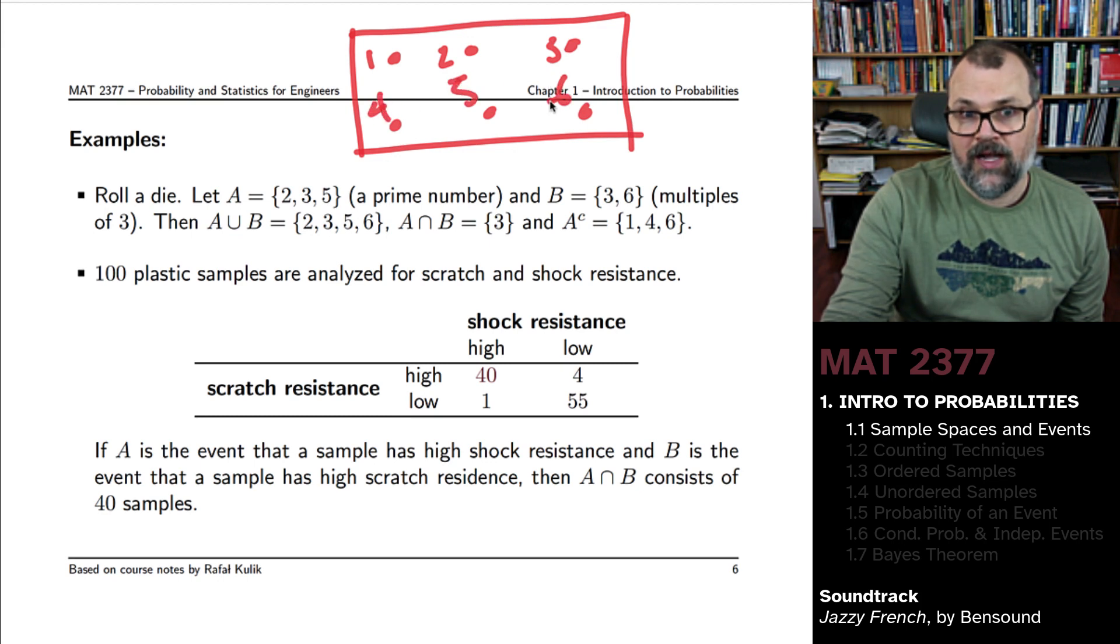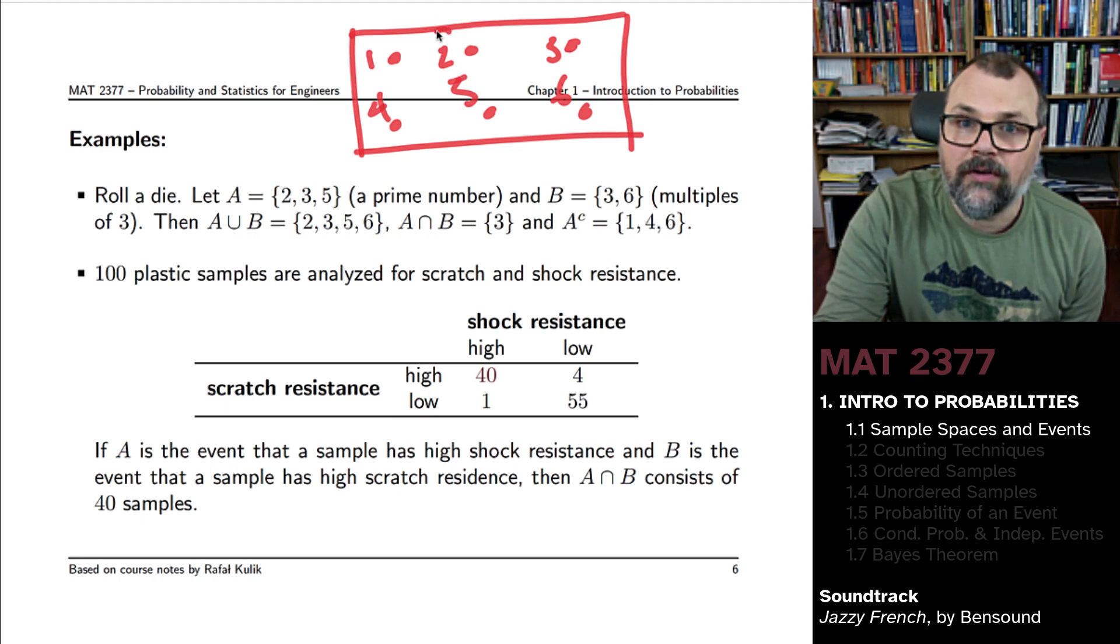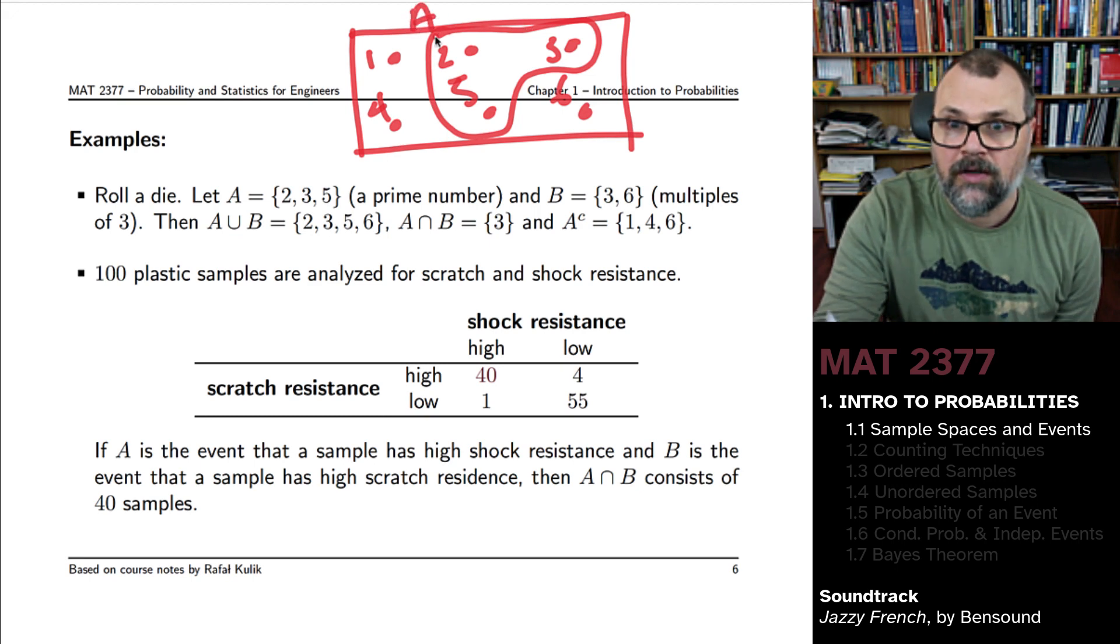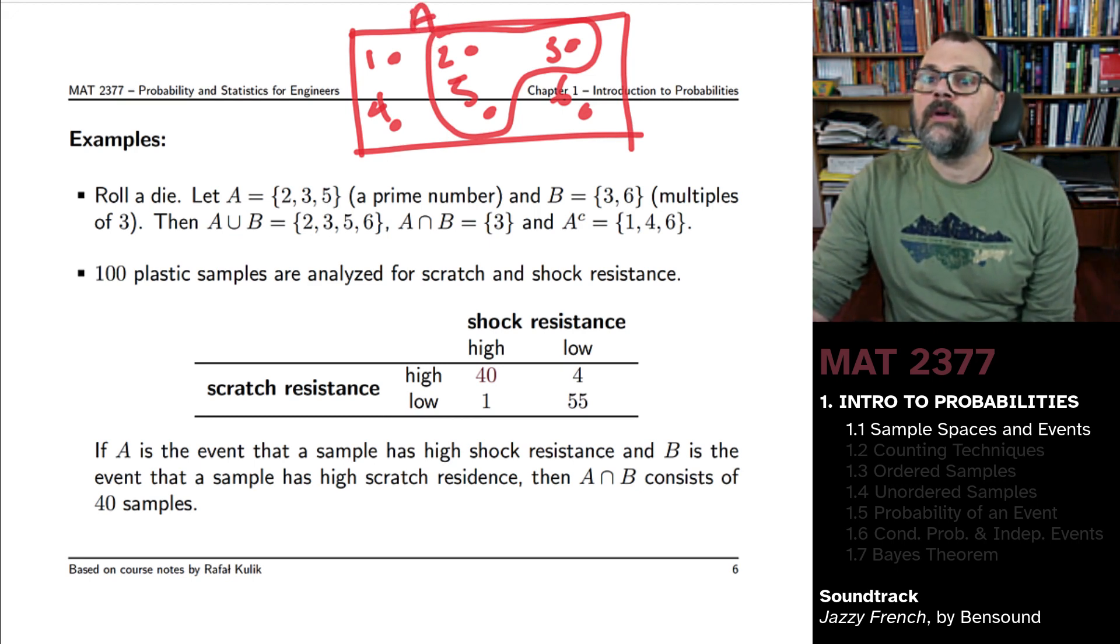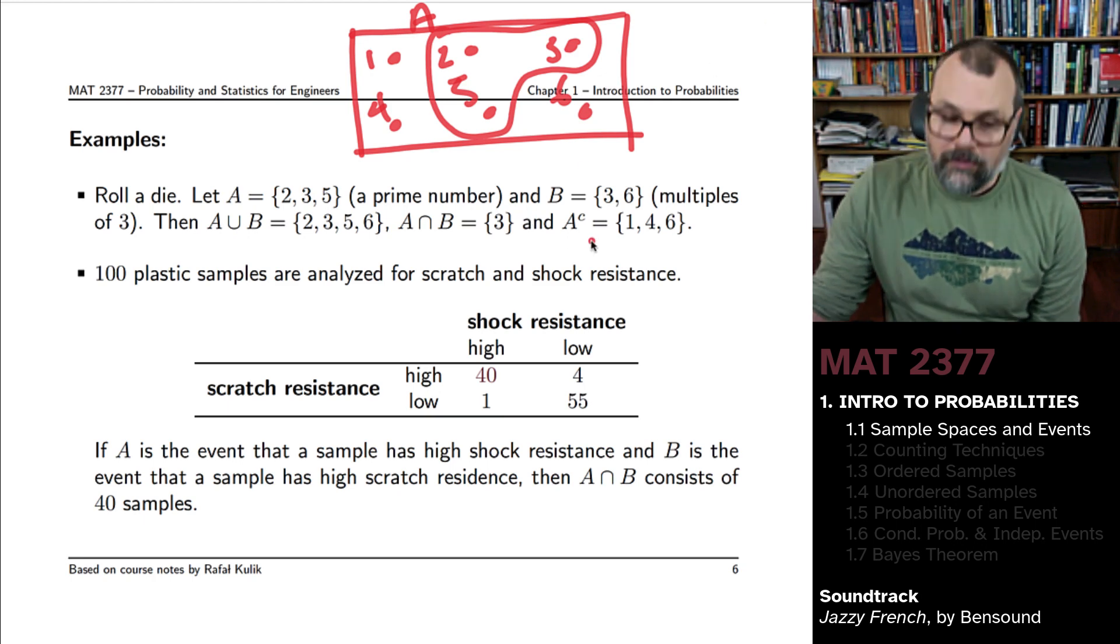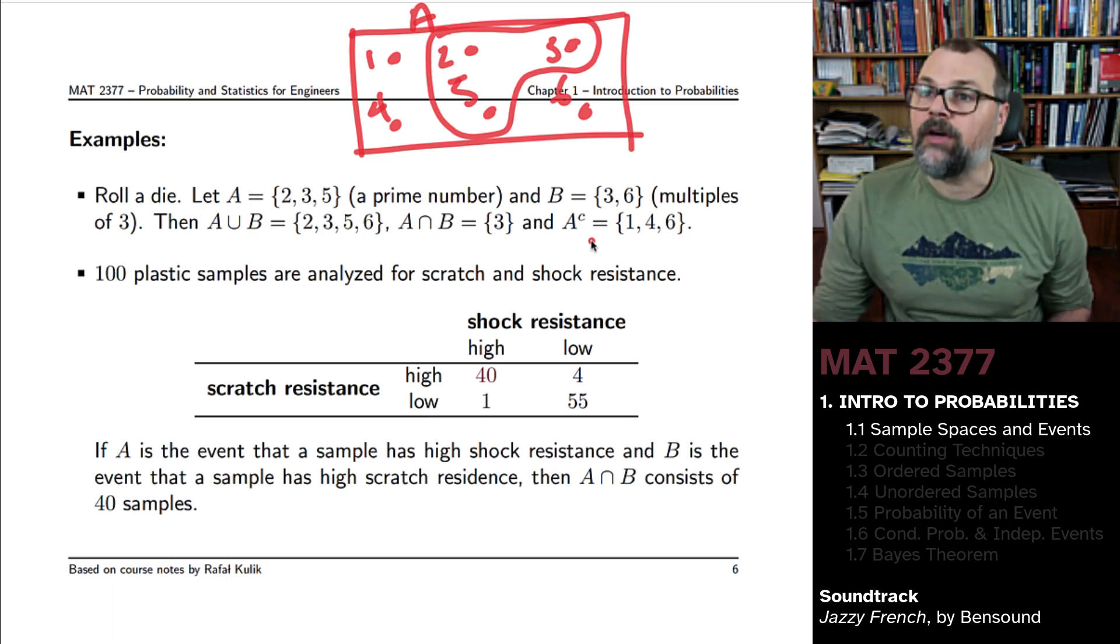And then you look at event A. Event A would be the numbers two, three, and five. This is what event A looks like. And event B is the set of multiples of three, so three and six. Now, if I was smart, I'd try to come up with a different color here.